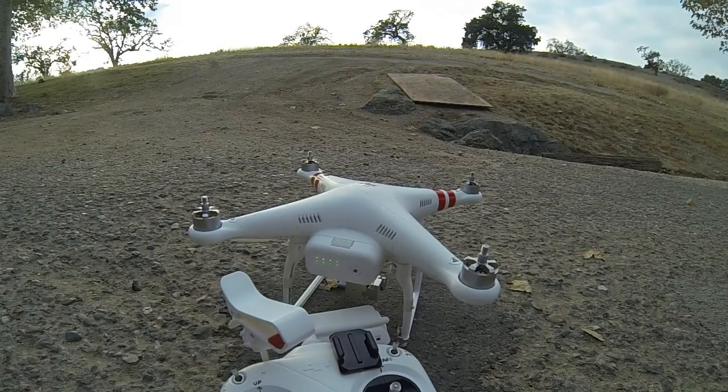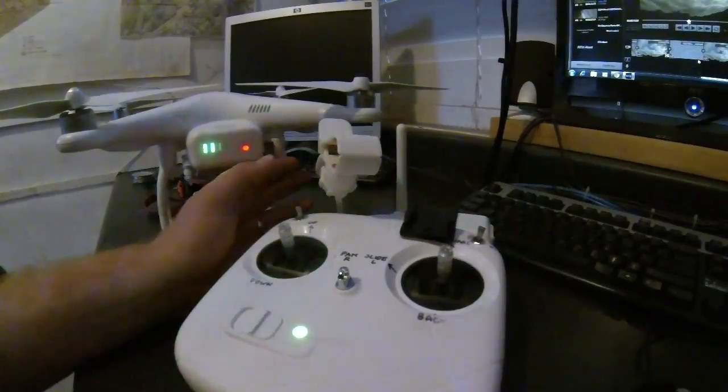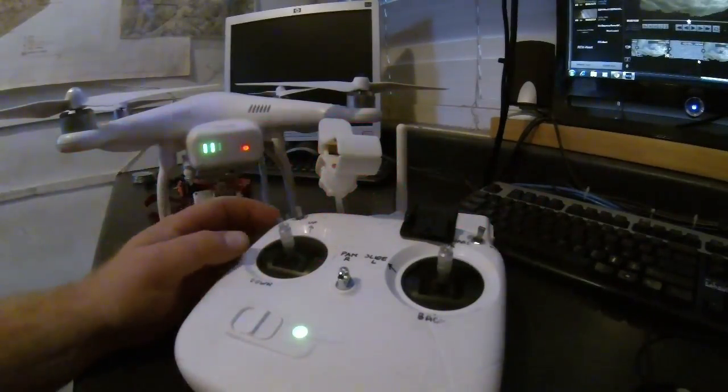Since we don't have all seven satellites, we're getting the intermittent red and green. So again, we're just going to go through the motions anyway.